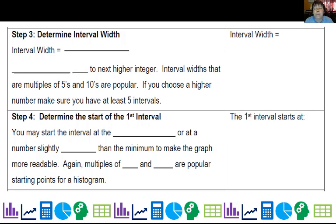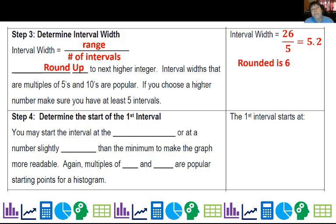Then we're going to have to figure out how wide the bar is. So the interval width is the range, how far apart the data is, divided by how many bars we want. So here we have 26 over 5 equals 5.2. And you're always going to round that up to the next integer. So that would be 6. Now that said, if I was just going straight, I would have 5 intervals with a width of 6. Usually interval widths are more popular when they're multiples of 5s or 10s. So if you choose a higher number, make sure that you have at least 5 intervals. So right now I have 5 intervals of 6, but I'd rather have a width of 5, and then make up for it with 6 intervals.